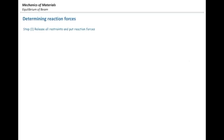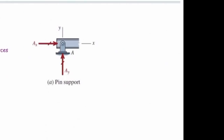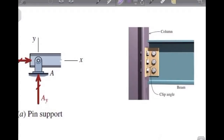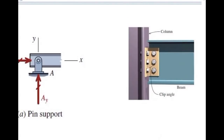We basically have three types of restraints. The first is the pin support — this is the graphical way we show it. The pin support has two reaction forces: force in the x and force in the y direction. In the real world, if you connect just the middle part of a beam to the support, it cannot transfer moment, only forces. That is called a pin support.